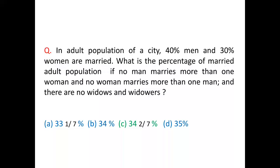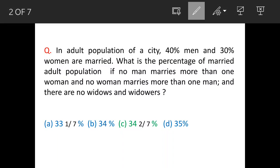Today we will see a question on percentage. The question says: in the adult population of a city, 40% of men and 30% of women are married. What is the percentage of the married adult population? The condition given is: no man marries more than one woman and no woman marries more than one man, and there are no widows or widowers. The answer is option C.